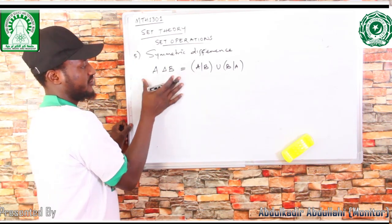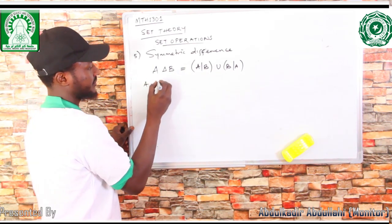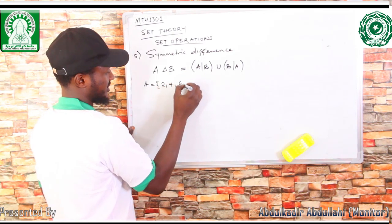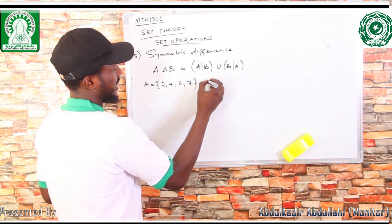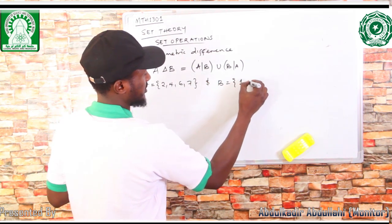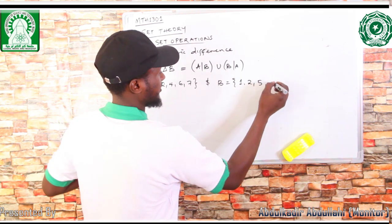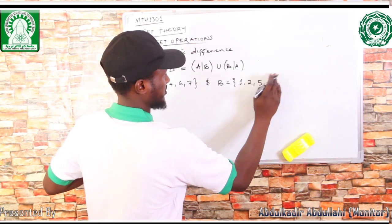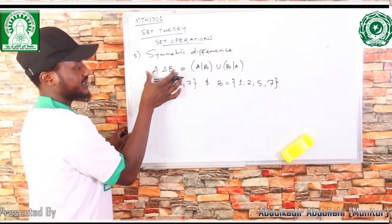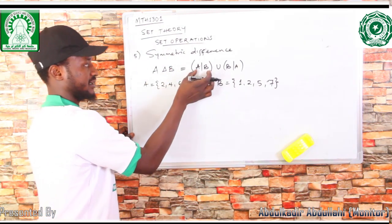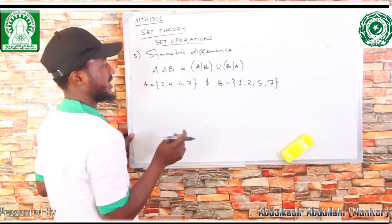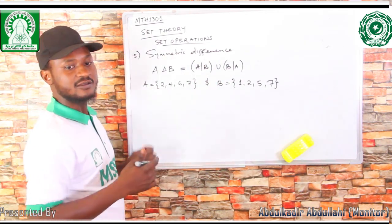For example, if you are given two sets A and B, where A is {2, 4, 6, 7} and B is {1, 2, 5, 7}, to find the symmetric difference we need to find the difference between A and B, and also the difference between B and A, then unite the results.